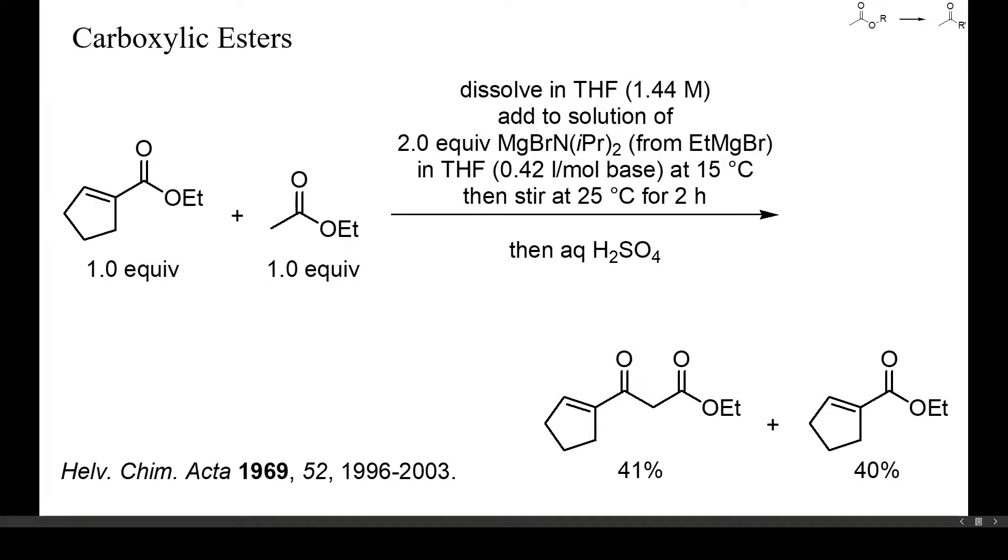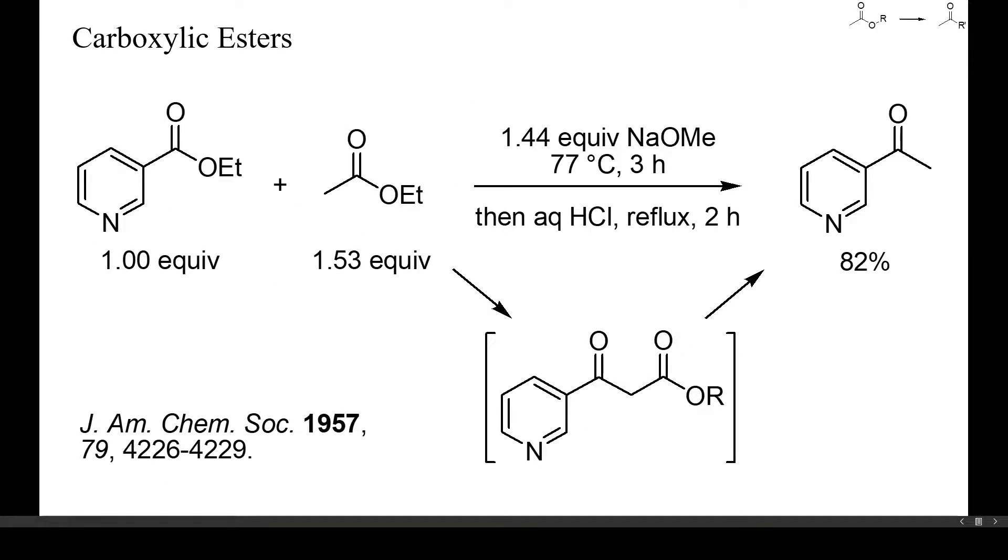In this example, the much weaker base sodium methoxide was used to condense ethyl nicotinate with ethyl acetate. Because pyridine is an electron-deficient heteroaromatic, ethyl nicotinate is more electrophilic than ethyl acetate, what might be one reason for the high yield of this reaction. The initially formed keto ester was hydrolyzed and decarboxylated by refluxing in aqueous hydrochloric acid.